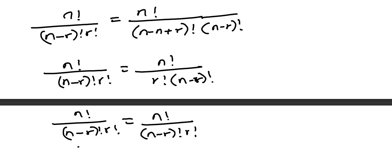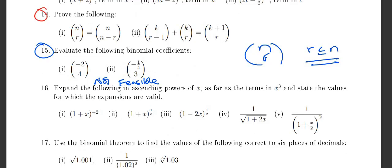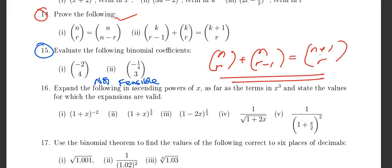You'll notice these are the same, so that's the proof for the first part — that's how you show n choose r equals n choose (n minus r). Now for the second part: there's a rule that says n choose r plus n choose (r minus 1) equals (n plus 1) choose r. They've just written it using k instead of n.